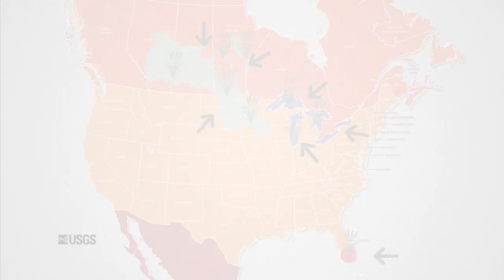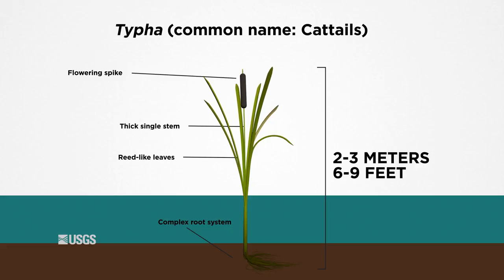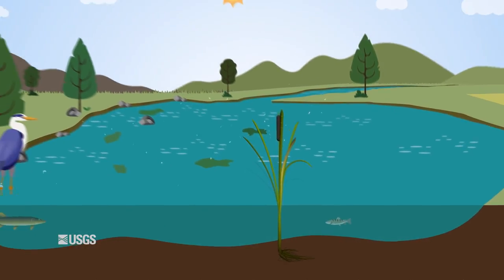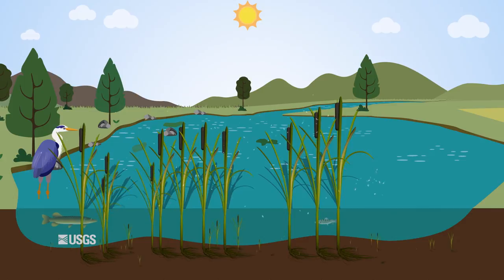Typha is the scientific name for cattail. These tall, reed-like plants grow rapidly in waterlogged areas, particularly areas disturbed by human activity. Cattail multiplies quickly from wind-transported seeds or genetically identical copies grown from existing roots.